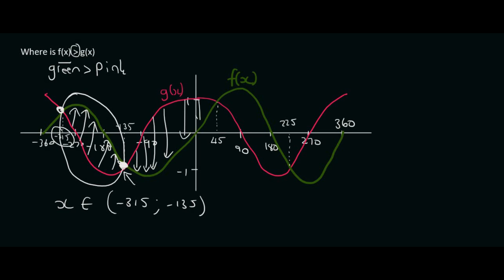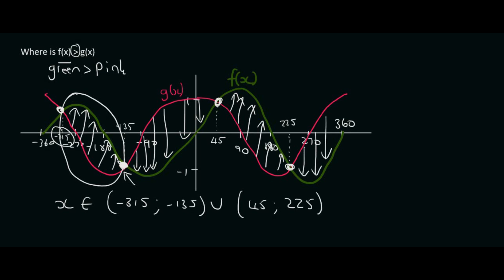Then over here the green graph is underneath. But after this point, the green graph is on top again. So we can say 'or', and then from 45 degrees up to 225 degrees — because after that, the green graph is underneath again. So when they ask where the green graph is above the pink graph, they just want to know where the green graph is on top.